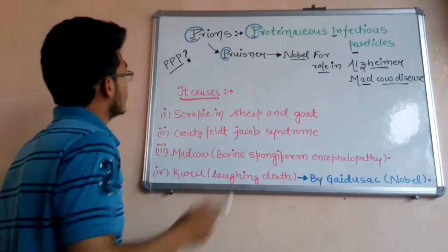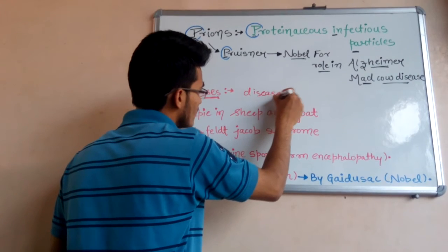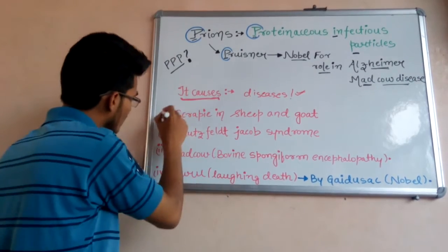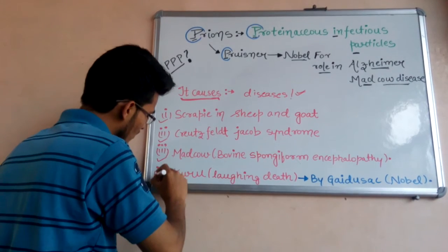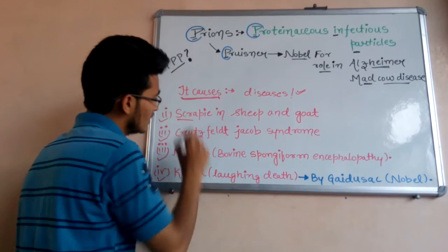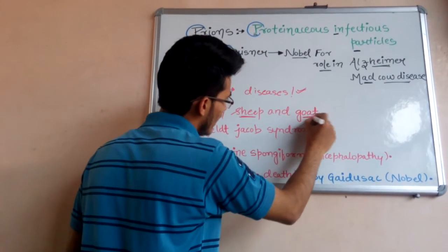Now, prions cause some kinds of diseases which are very important from the examination point of view. You have to remember the names of these four diseases. The first disease caused by prions is scrapie, which is caused in sheep and goat.